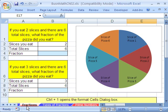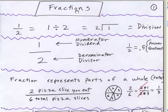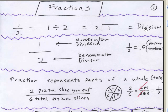We're in chapter 2 now — we need to talk about fractions. What is a fraction? 1 divided by 2. A fraction just means division. 1 half, 1 over 2, is equal to 1 divided by 2. It's just division.